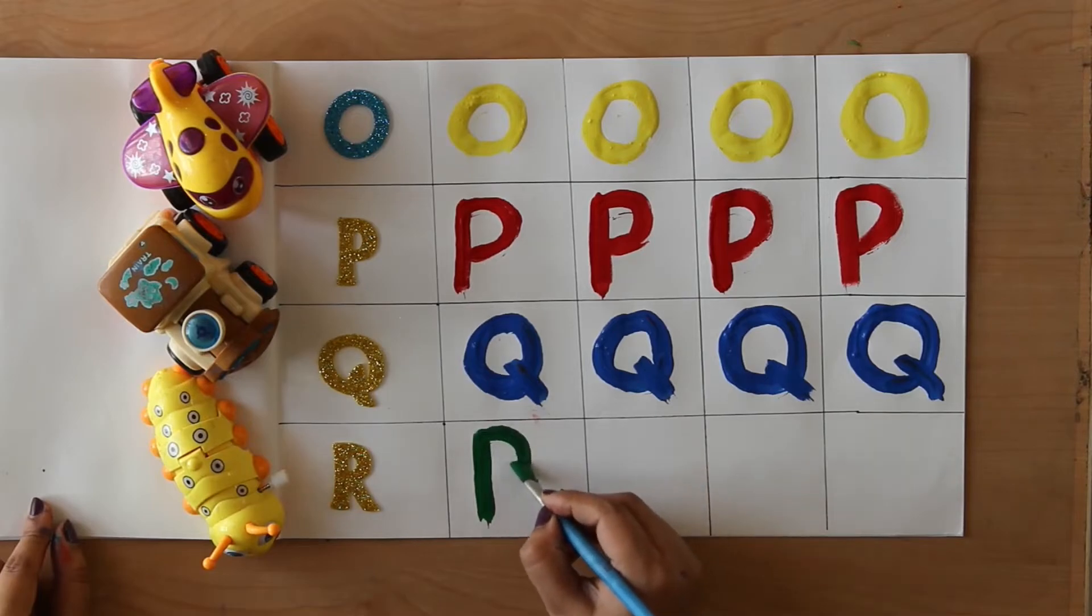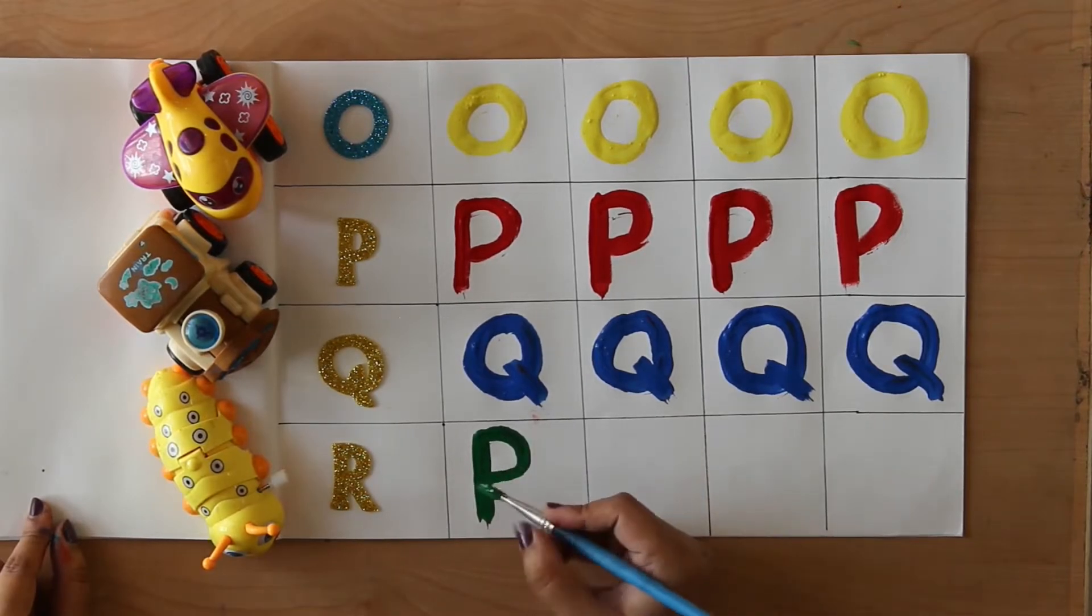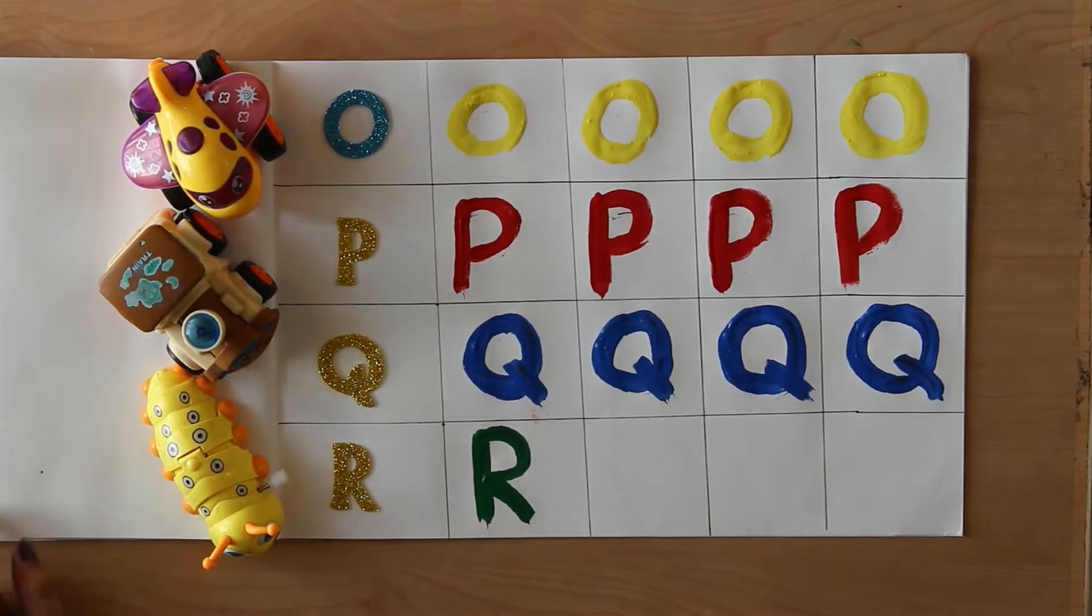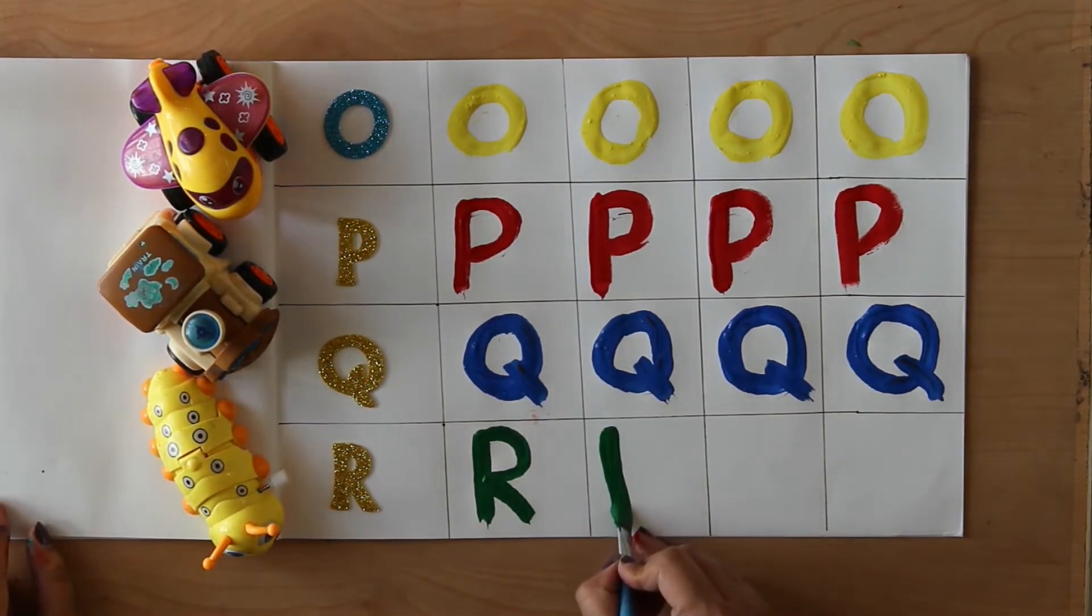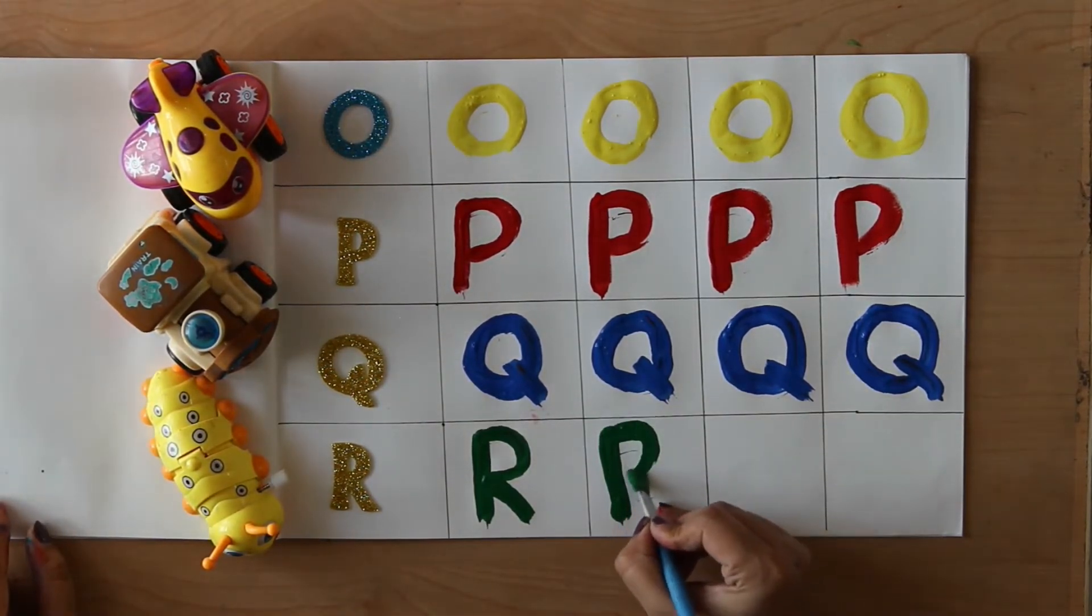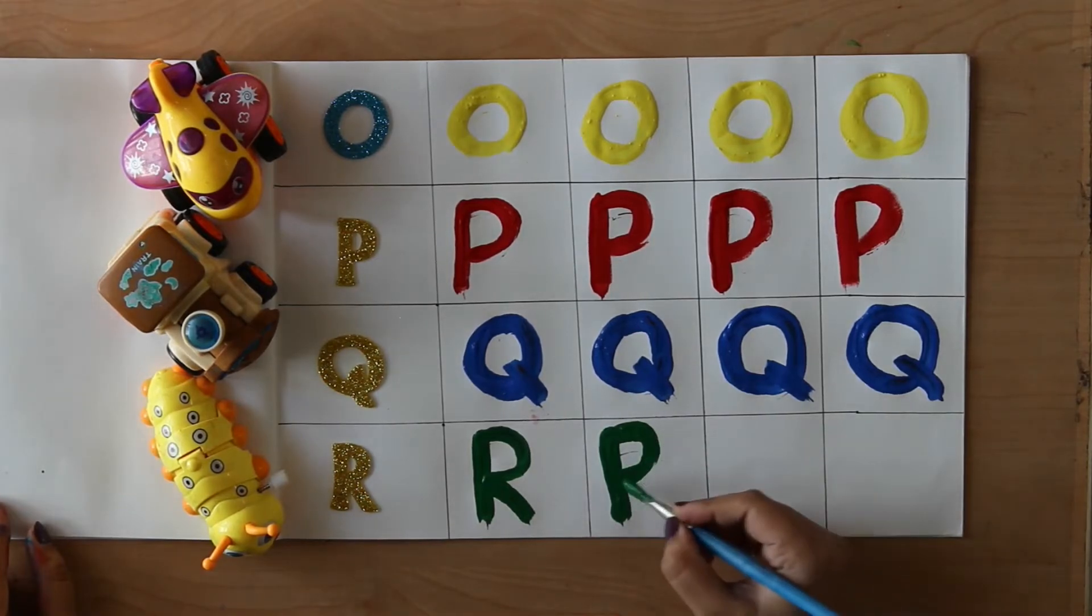R. R for rabbit. Rabbit means Khargosh. R. R for rose. Rose means Gulab.